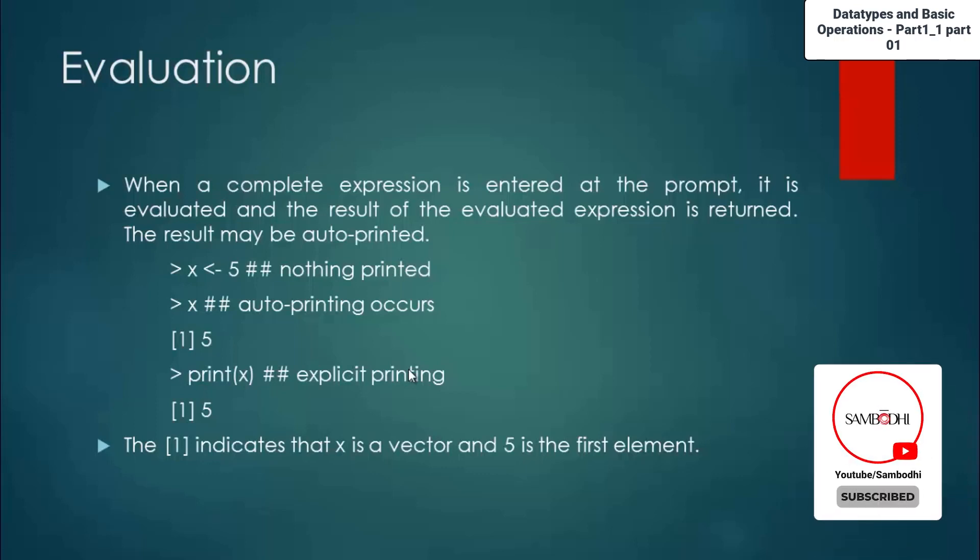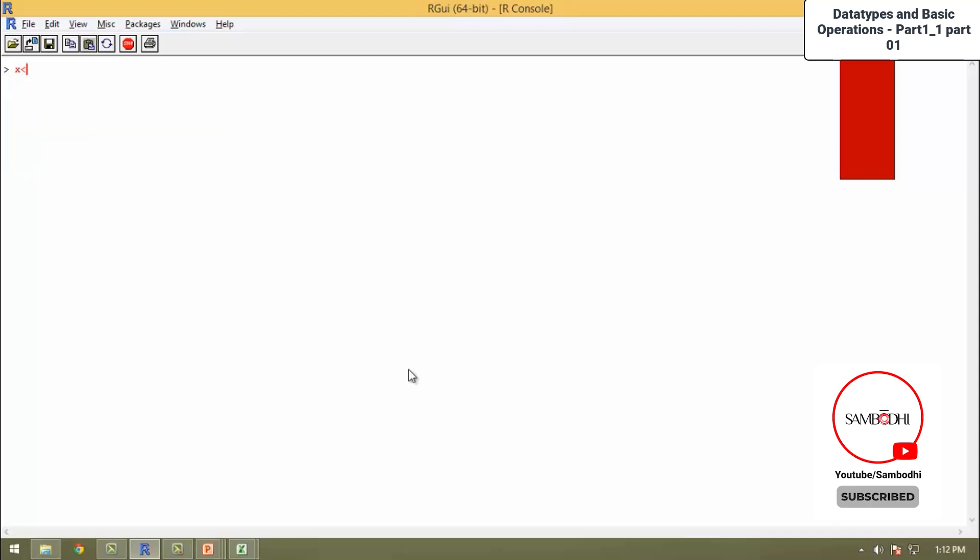Now I will explain you from the sheet. We will go ahead with the same example. When you assign values 1 to x, it is assigned to it. Either you can use printing which is called as auto printing. When you just print x, it will print the value of x, or you can explicitly type print of x to print the value of x. There are two ways of printing it.